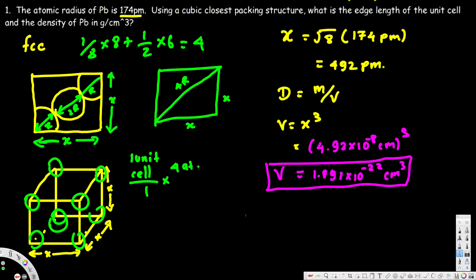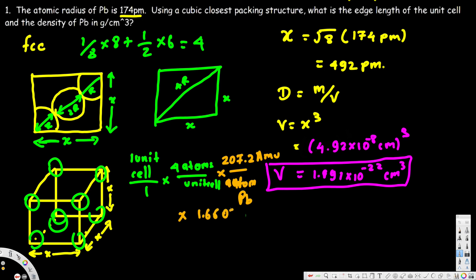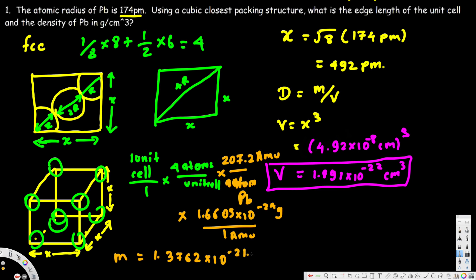We multiply by 4 atoms per unit cell. Since we are talking about Pb, the atomic mass of Pb is 207.2 atomic mass units per atom. To convert to grams, we multiply by 1.6605 × 10⁻²⁴ grams per atomic mass unit. Doing all the multiplication, the total mass is 1.3762 × 10⁻²¹ grams.